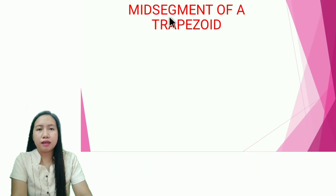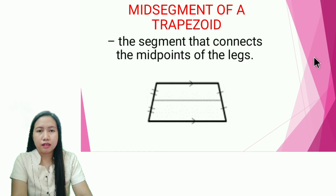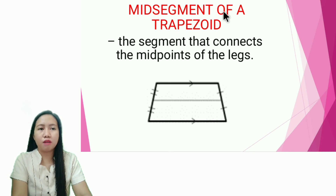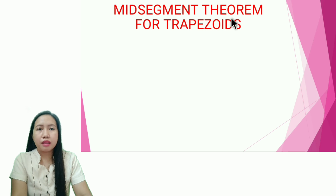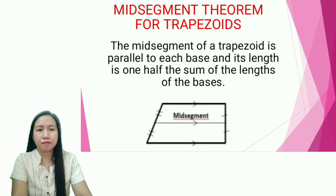Next, the mid-segment of a trapezoid is the segment that connects the midpoints of the legs. The Mid-Segment Theorem for Trapezoids states: the mid-segment of a trapezoid is parallel to each base, and its length is one half the sum of the lengths of the bases.